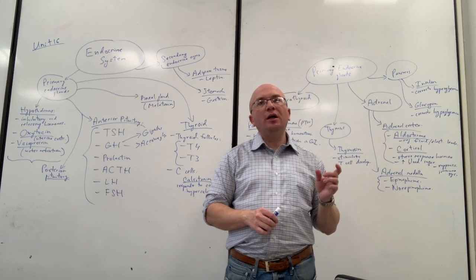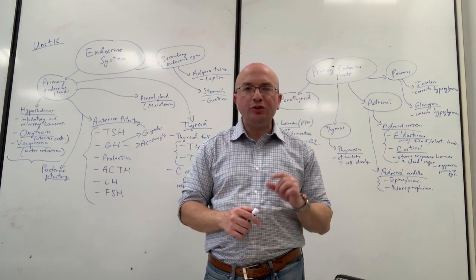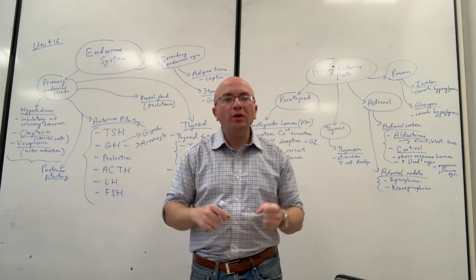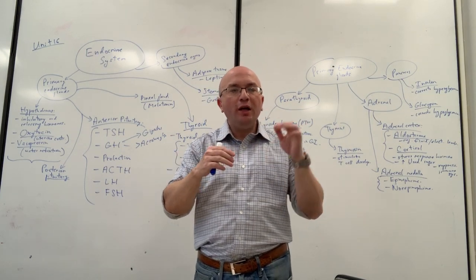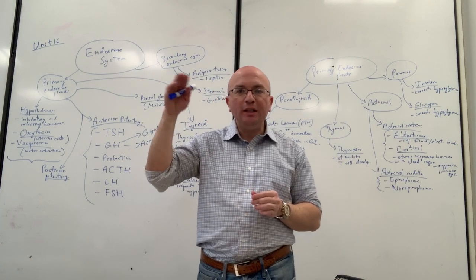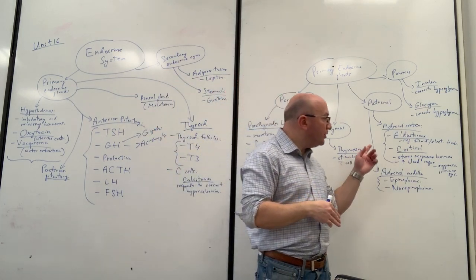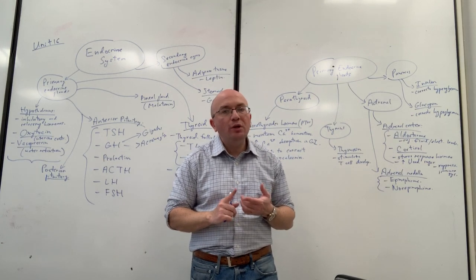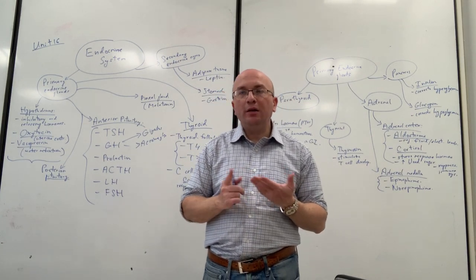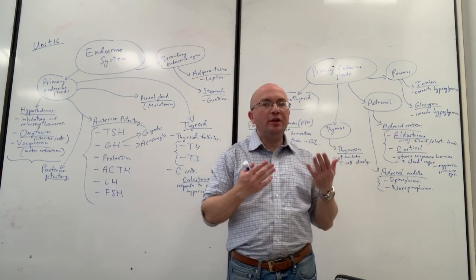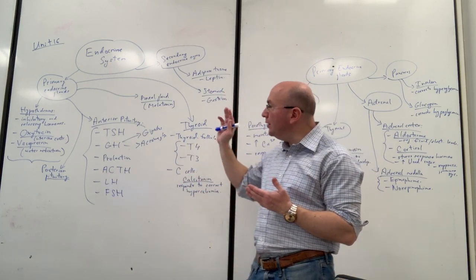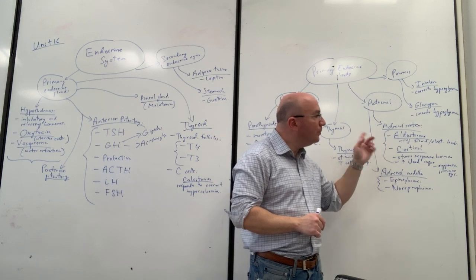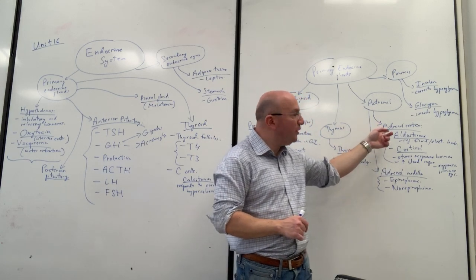Cortisol is produced in a diurnal pattern — the highest concentration is released early in the morning when you wake up, like a 'seize-the-day' hormone giving you a boost of energy. The lowest concentration is later at night when you're going to sleep. Cortisol helps your body prepare for normal daily functions, helps deal with stress, helps with metabolism of glucose and carbohydrates in general, and supports normal body function — similar to the way growth hormone and thyroid hormone do. Cortisol is a stress response hormone coming from the adrenal cortex.